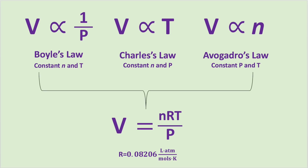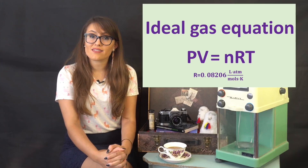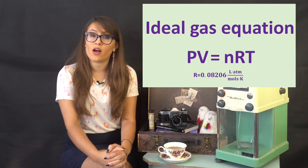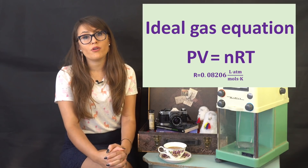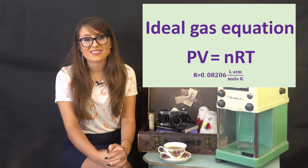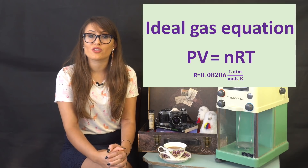As we did before, we can replace the proportionality symbol with an equal sign and our proportionality constant, which is R. R is also referred to as the ideal gas constant, which is equal to 0.08206 liters times atmospheres divided by Kelvin times moles. So our ideal gas law becomes pressure times volume is equal to the number of moles times the ideal gas constant times temperature in Kelvin.